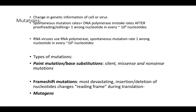Frameshift mutations are the most devastating type, where the mutation causes the mRNA to be read in a totally different reading frame, resulting in a complete mix-up of amino acids. Mutagens are substances that increase mutation rates above the spontaneous rate — for example, UV radiation and chemical mutagens.